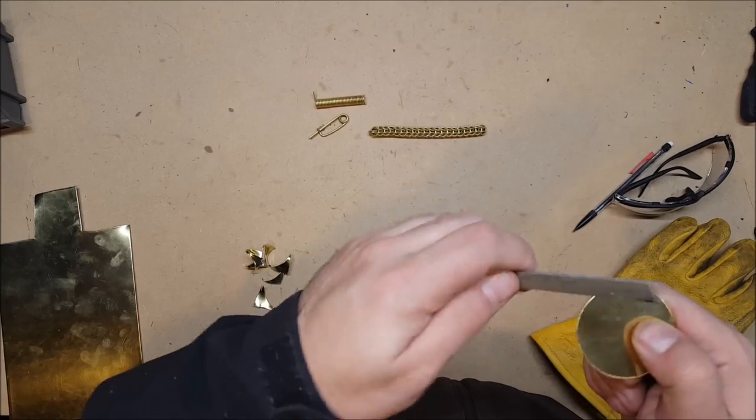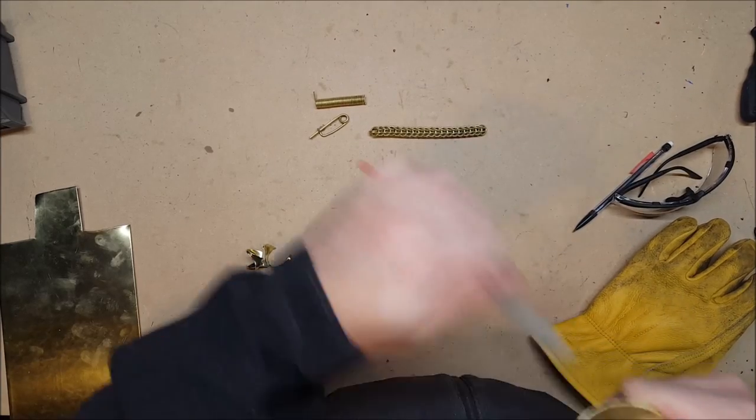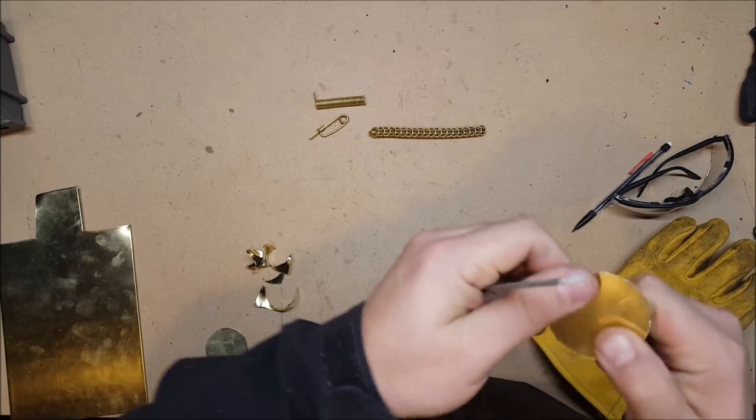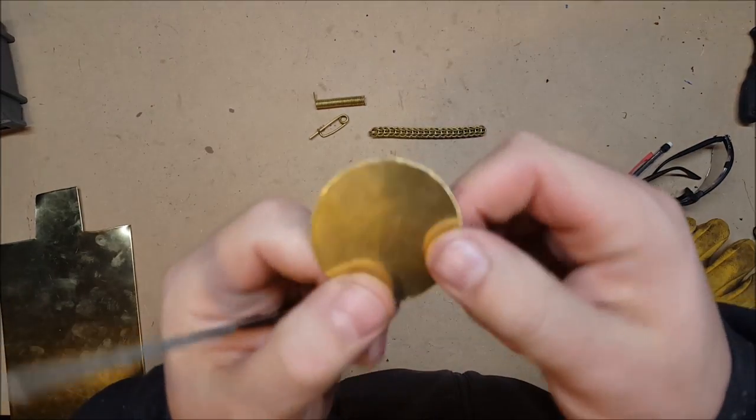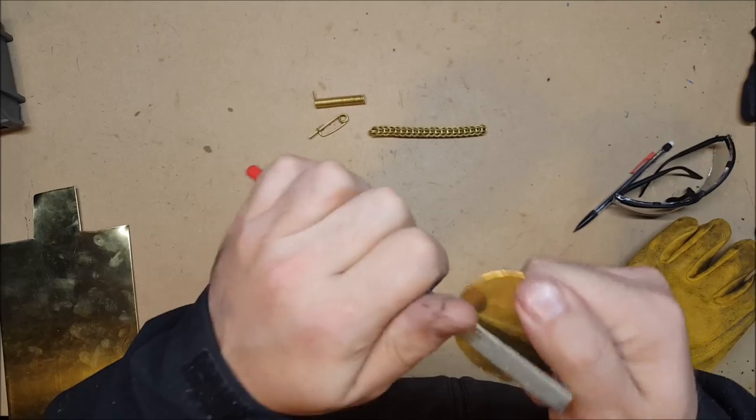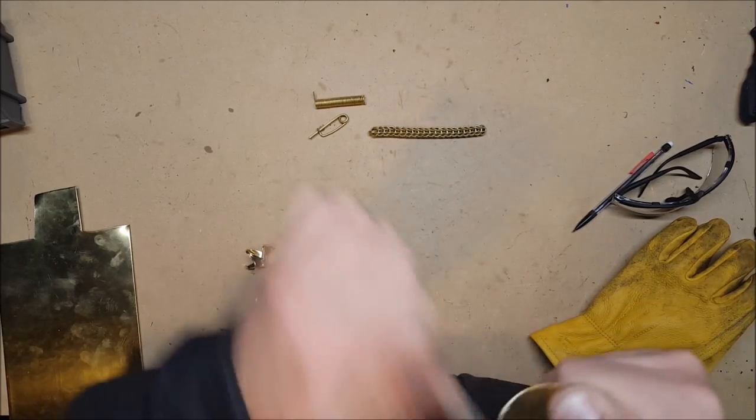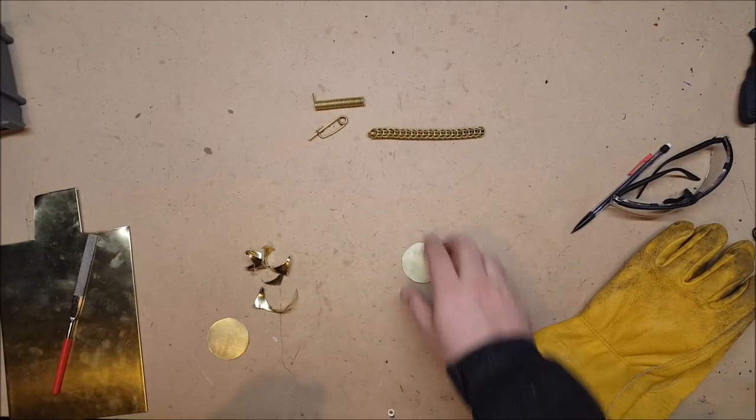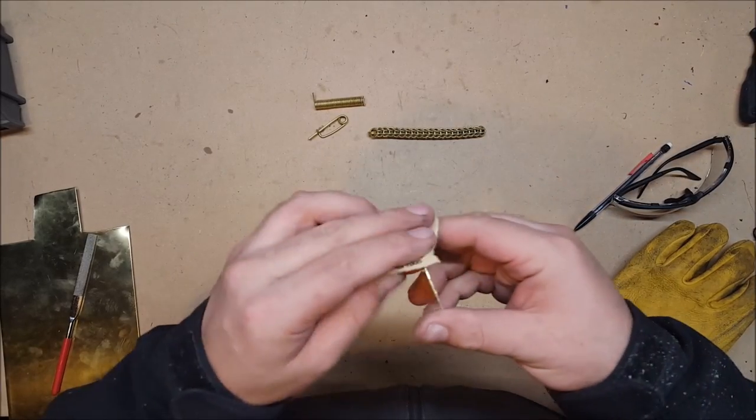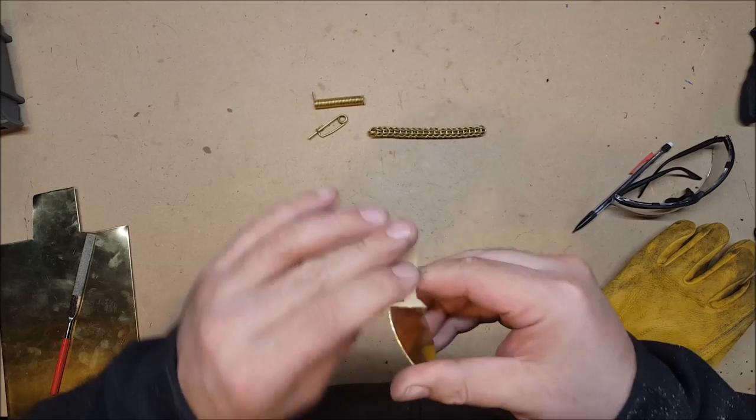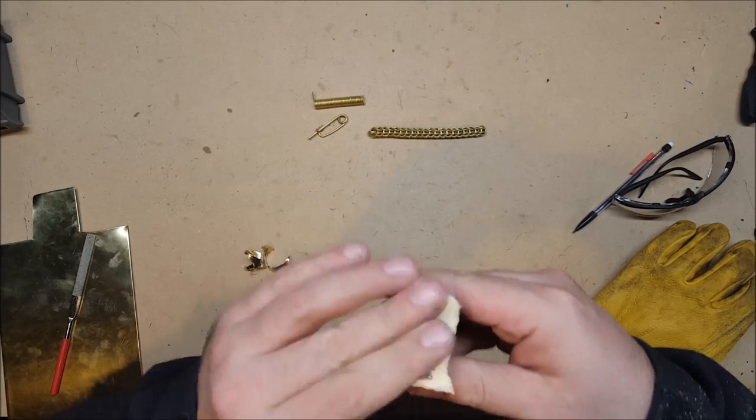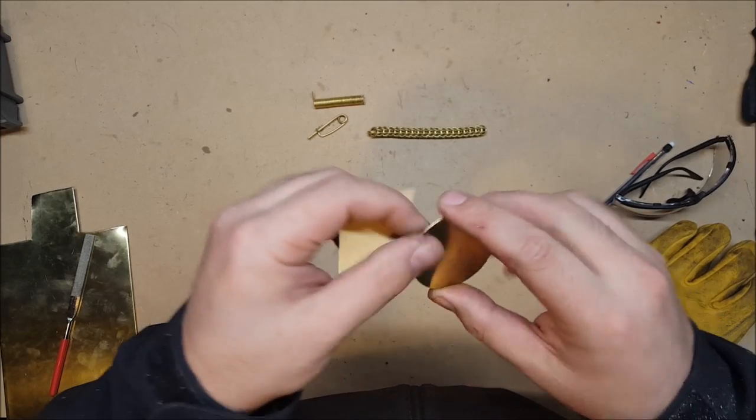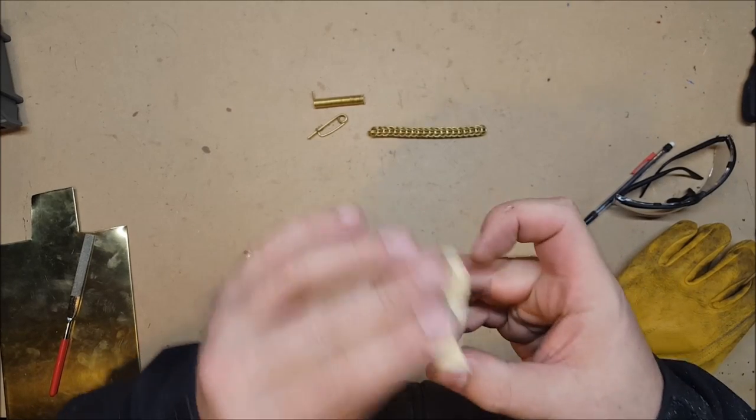Nothing particularly interesting or complicated here, just going along the edge with a file, clearing off all of the burrs from the grinder. Obviously we want the edge to be as smooth as possible since this is going to be worn on a cloak and we don't want it cutting the fabric. So we're going to hit the edge with a little bit of sandpaper now.